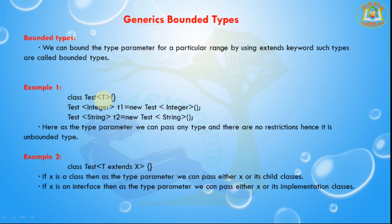Here is the class test — it takes T. Whenever we are creating an object of T1 with a particular type, it automatically replaces T with that class name. In the first statement, T is replaced with Integer; in the second, T is replaced with String. As the type parameter we can pass any type and there are no restrictions, hence it is an unbounded type.